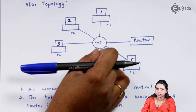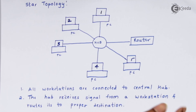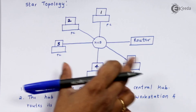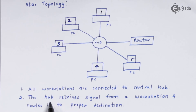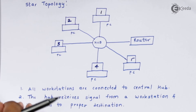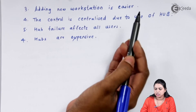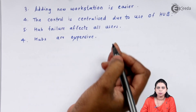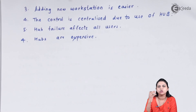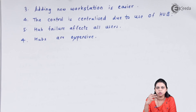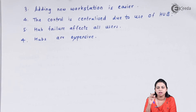So this is the working of star topology — all workstations are connected to a central hub, so the control is centralized. Hub receives the signal from the workstation and routes it to the proper destination. Adding a new station is easier because your nodes are not connected to each other; your nodes are connected directly to the hub.